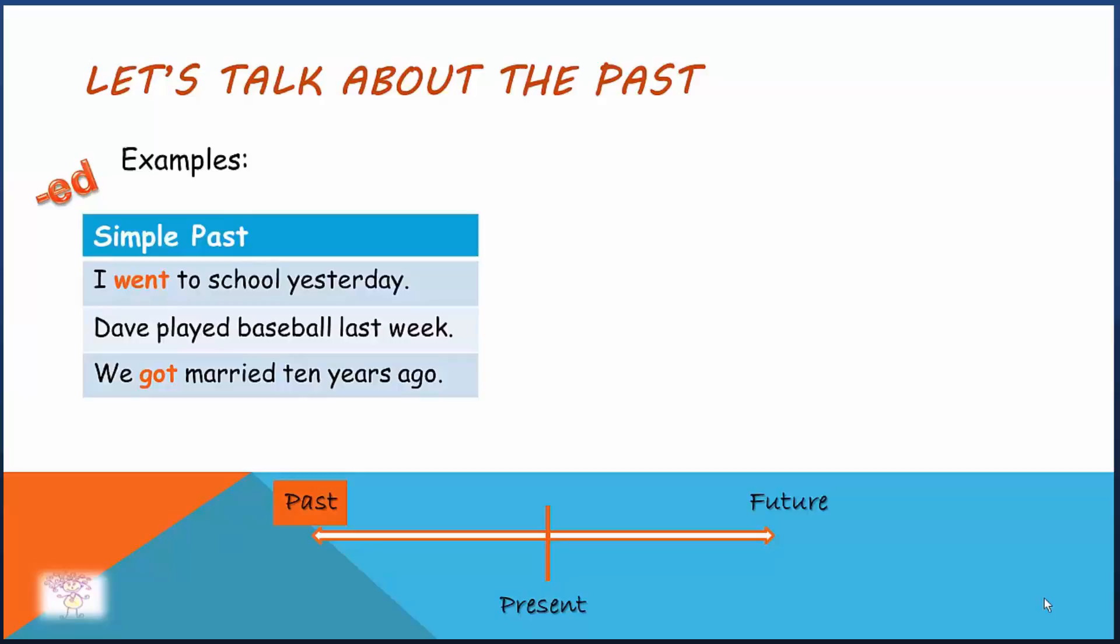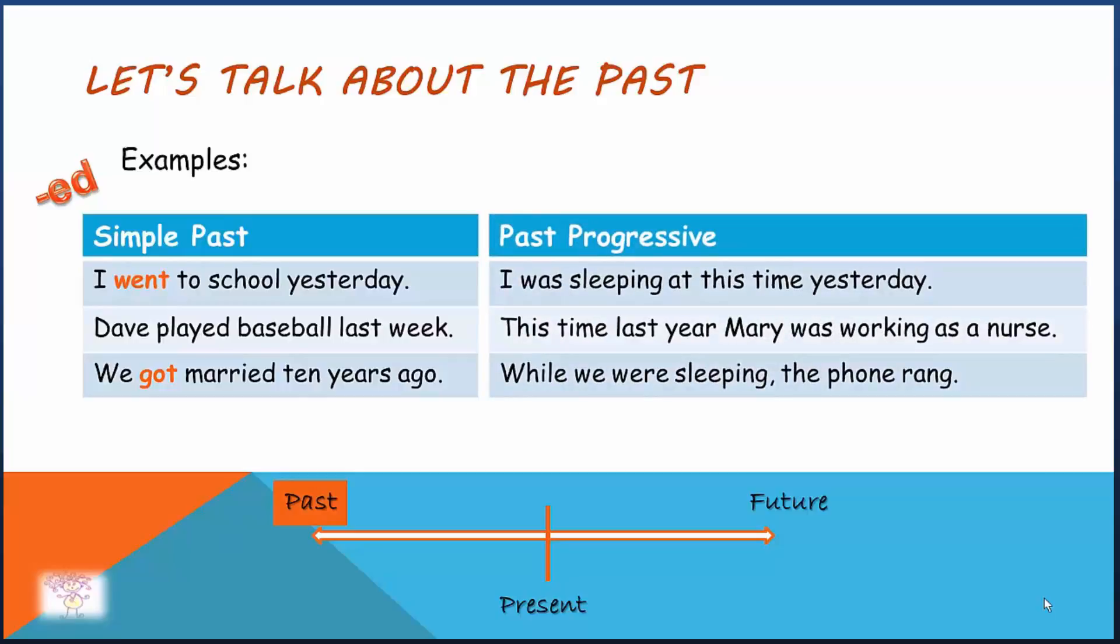And here are some in past progressive. I was sleeping at this time yesterday. This time last year, Mary was working as a nurse. While we were sleeping, the phone rang. Past progressive is was or were plus verb ing.